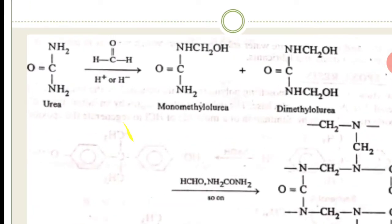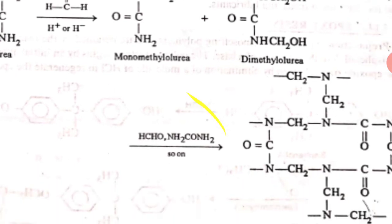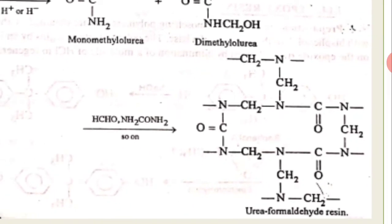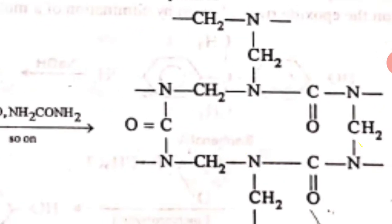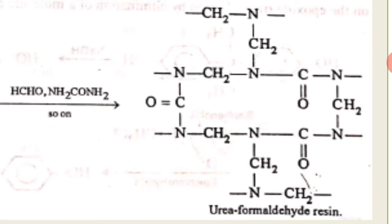Similarly, it is also added to wool. In the preparation: take urea and formaldehyde — first monomethylol and dimethylol urea form, then N molecules condense repeatedly to finally give the urea-formaldehyde resin polymer.